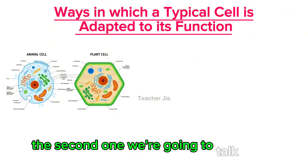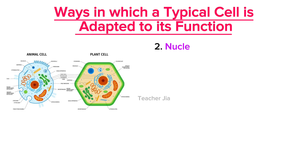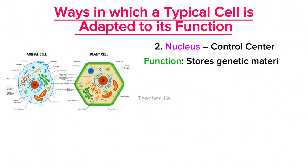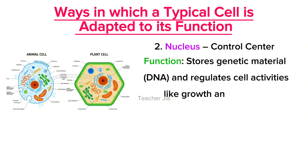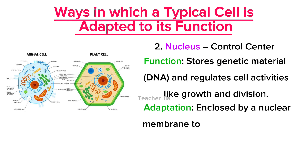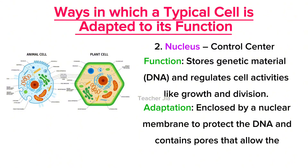The second one is the nucleus, which is the control center. Its function is that it stores genetic material — that is the DNA — and regulates cell activities like growth and division. In adaptation, it is enclosed by a nuclear membrane to protect the DNA and contains pores that allow the exchange of materials like RNA.